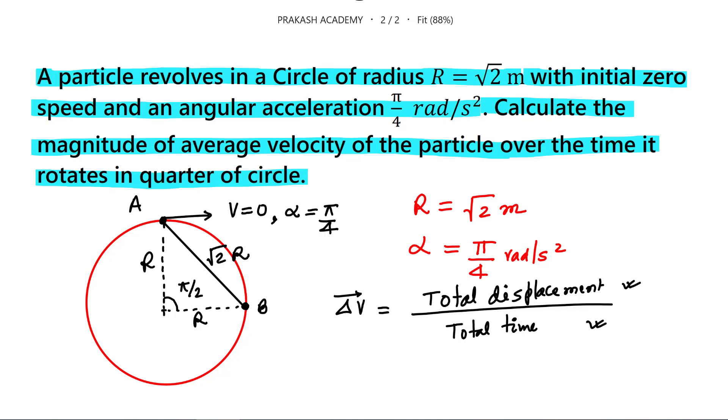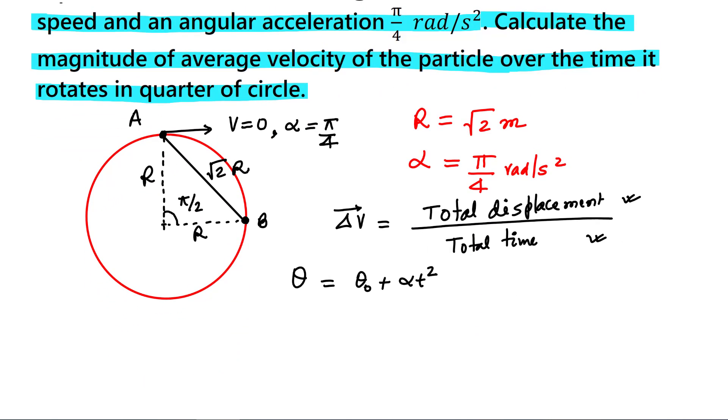Theta equals theta not plus alpha t square, if I use this formula. So initial theta is 0 degree, that is theta not equals 0. And finally it has moved through angle of pi by 2. And alpha is given, that is pi by 4. And this is half alpha t square, so this is half, and t square. So from here we can say t equals, pi cancels, and this 8 by 2 is 4. So this is square root of 4, so this is 2 second.